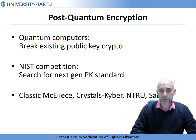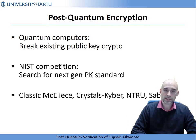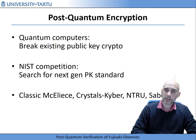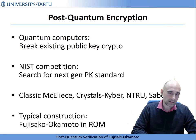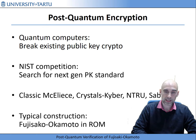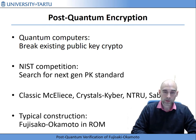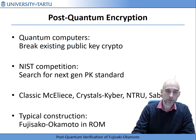We have already reached the stage where we have several promising candidates. In the current third round we are left with Classic McEliece, CRYSTALS-Kyber, NTRU, and SABER. If we look at these cryptosystems, we see they all have one thing in common: they use the random oracle to transform a weak, probably not chosen-ciphertext-secure encryption scheme into a strong cryptosystem in the random oracle model, using some variant of the Fujisaki-Okamoto transform.